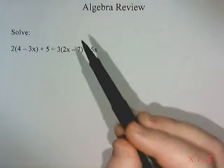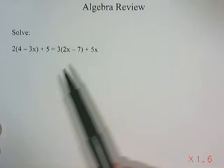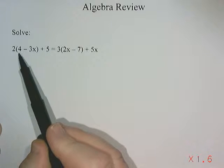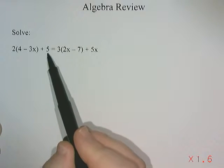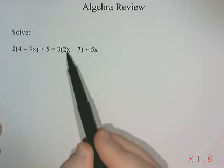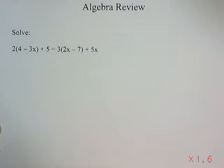Algebra review. This question says solve 2(4-3x)+5 = 3(2x-7)+5x.